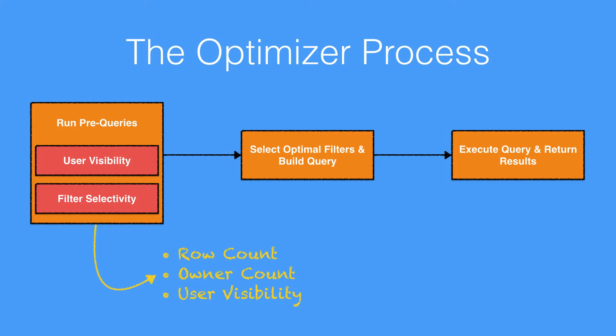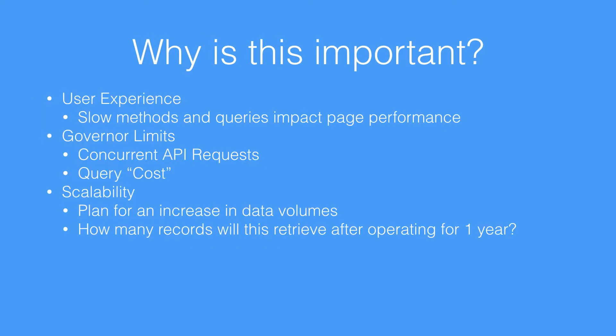At a high level we've seen what the optimizer does and why we need it. Before we go on in future videos to discuss how we can improve performance through indexing, how we can make our queries more performant, and how selectivity works, it's worth spending a moment discussing why it's important. There are three main reasons that query efficiency matters, and the first and most noticeable is user experience.